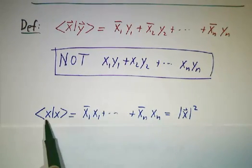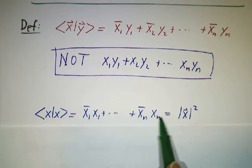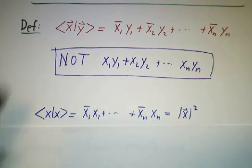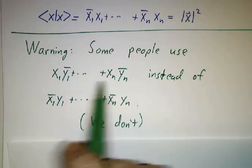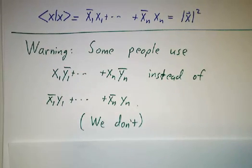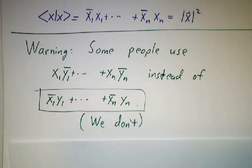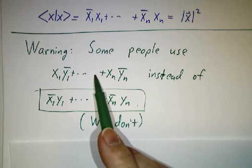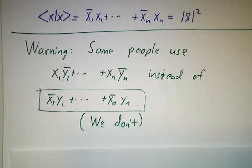And that way, if you take the inner product of x with itself, you get x1-bar x1 plus x2-bar x2 plus xn-bar xn, and that's the length of x squared. So this is the definition that works. Now, I do warn you, there are some people who put the bar on y instead of on x. I'm going to always use this convention, putting the bar on x instead of y. In general, mathematicians tend to put the bar on the second factor. Physicists always put the bar on the first factor. Throughout my book and throughout these lectures, I'm always going to follow the physics convention and put the bar on the first factor.